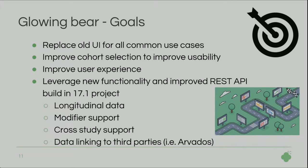This brings me to the goals of the new UI, which is to replace the old UI for all common use cases — cohort selection, some advanced workflows, data export — improve cohort selection to improve usability and user experience, and leverage the new functionality of the improved REST API being built in the 17.1 project. This includes longitudinal data support, modifier support, cross study support, and data linking to third parties, in this case ARPHADOS.